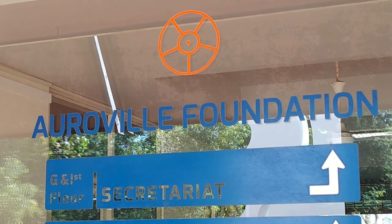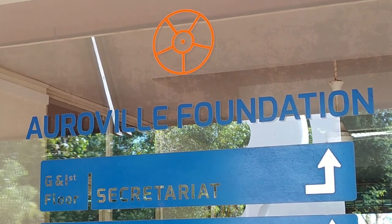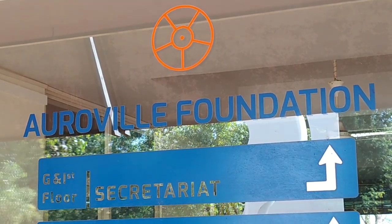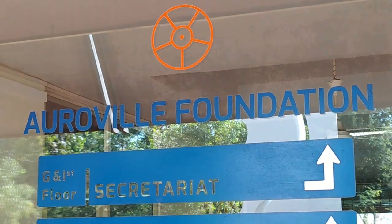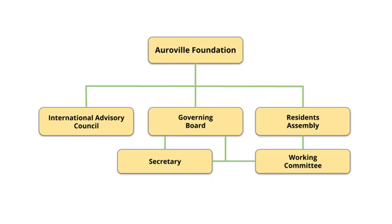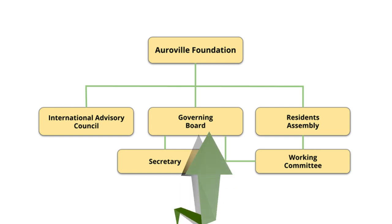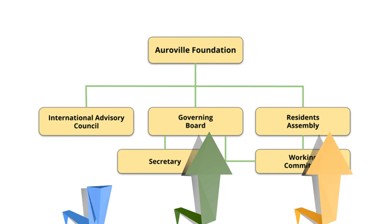Let's start with the Auroville Foundation. It was established by an Act of Indian Parliament in 1988, and what most people don't know outside of Auroville is that it consists of three authorities: a governing board, a Residence Assembly, and an international advisory council.